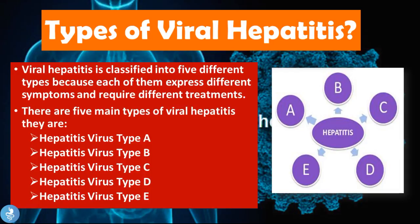There are five main types of viral Hepatitis: Hepatitis virus type A, type B, type C, type D, and type E. I have done a video on type A and B — if you want to check those out, I'll put a link in the description. But today's video will focus specifically on Hepatitis C. So let's begin our presentation on Hepatitis C.